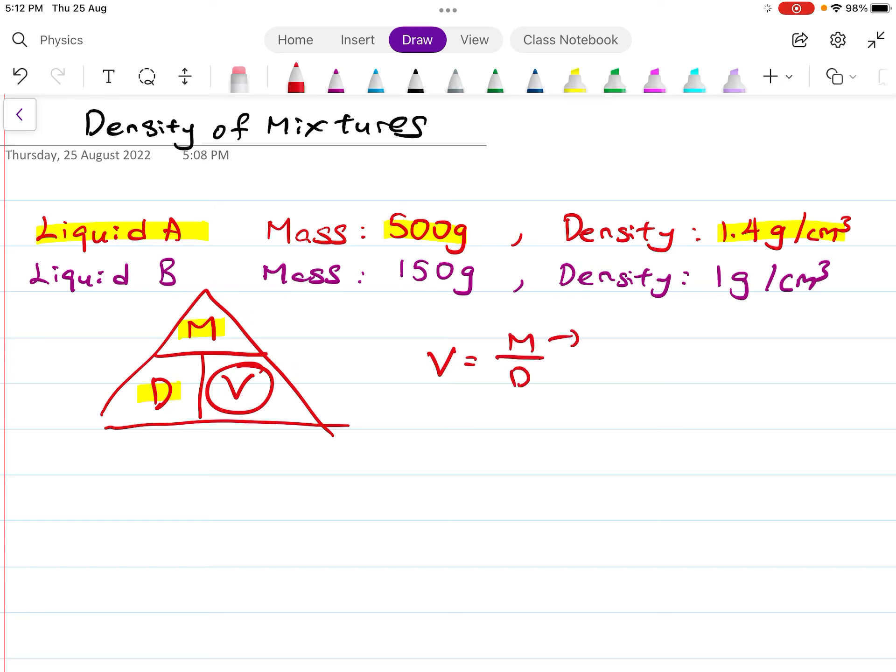Mass is 500, density is 1.4. So 500 divided by 1.4 is about 357.17 cm³. Next is liquid B. Same thing - we are given mass and density.